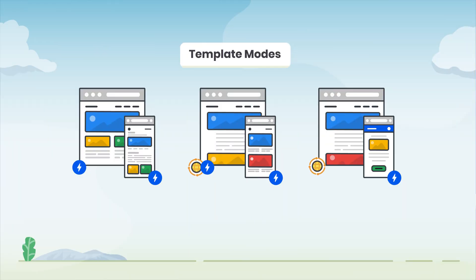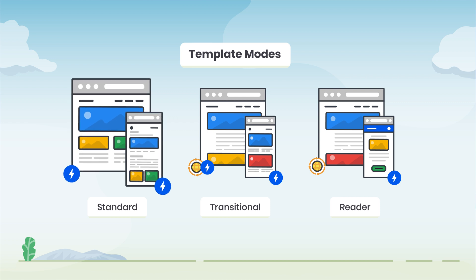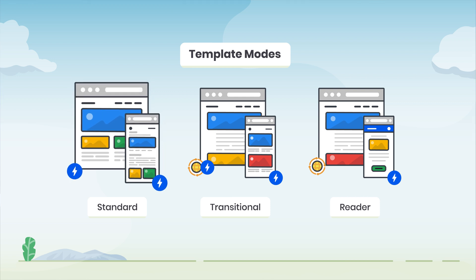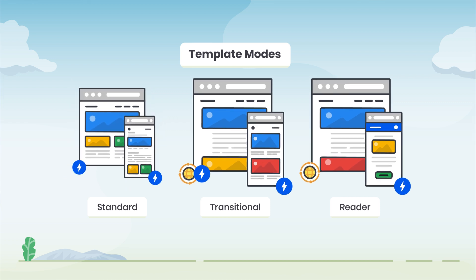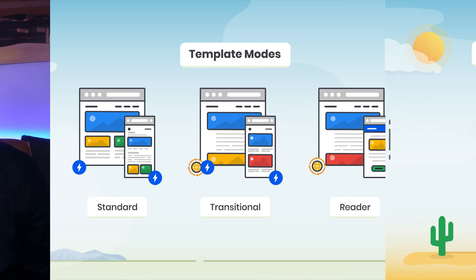Depending on the options you choose, the plugin will use one or two sets of theme templates to render your content, and you may have either your whole site on AMP, or you may have an AMP version and a non-AMP version of your site.